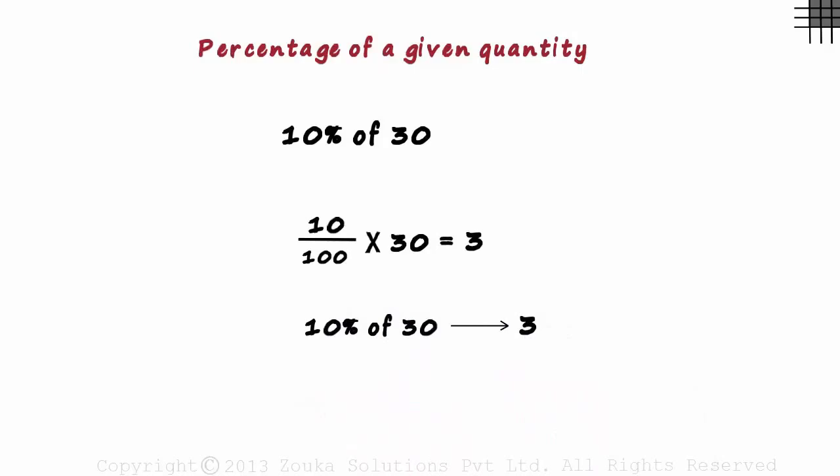But what does this exactly mean? Let's understand this with an example. What it actually means is 3 out of 30 parts equals 10%.